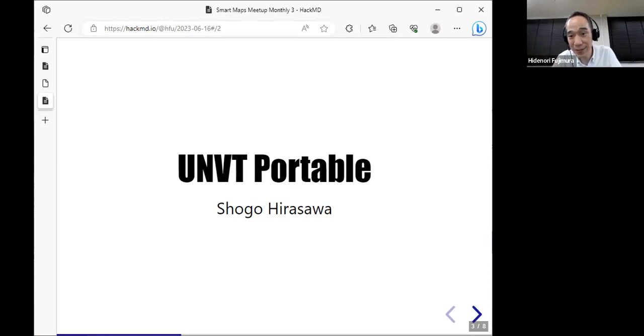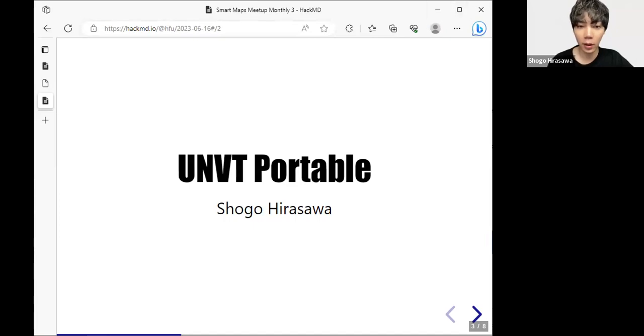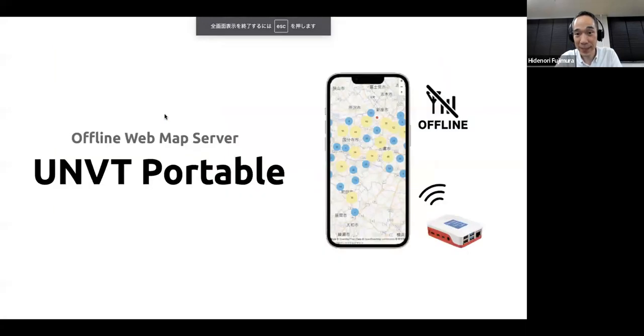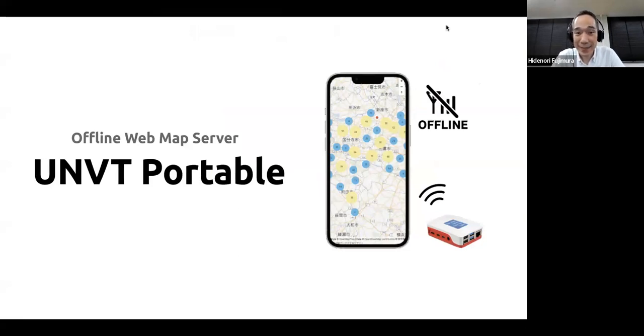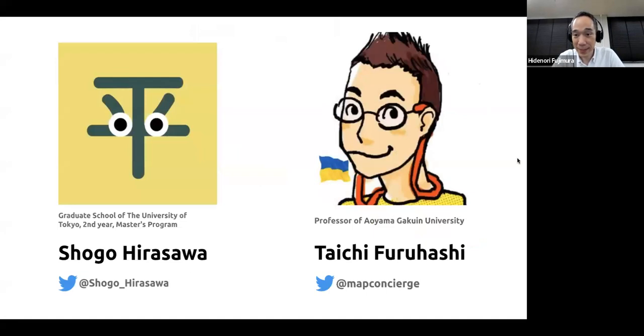Okay, please — I'll share my slide in the Zoom chat so please check it. Can you see my screen now? Okay. Thank you for the opportunity today. I'll briefly introduce the UNBT Portable. This is an offline web map server based on the Raspberry Pi. This project is adopted by the UN Open JS initiative, and it is kind of the main project for us.